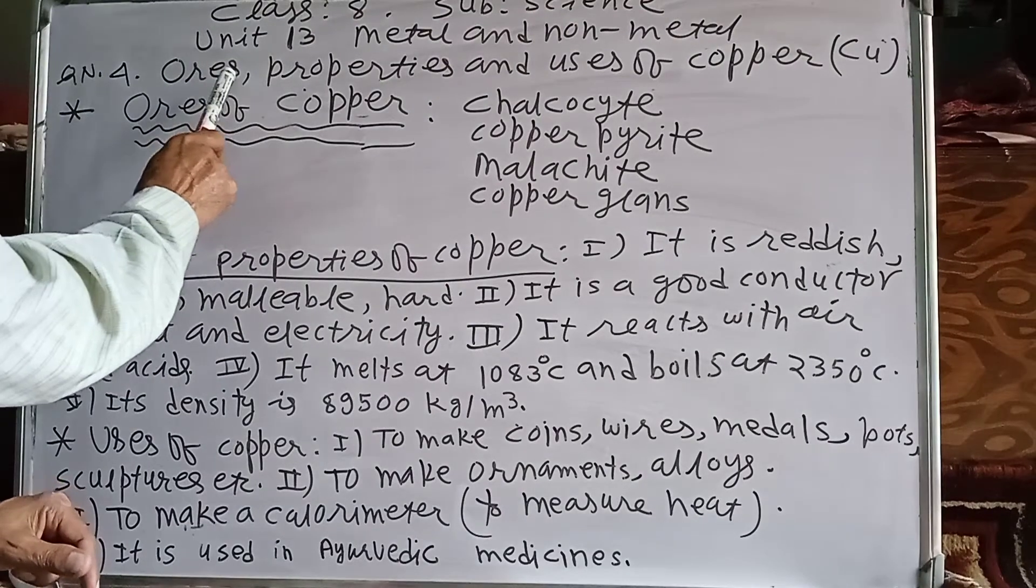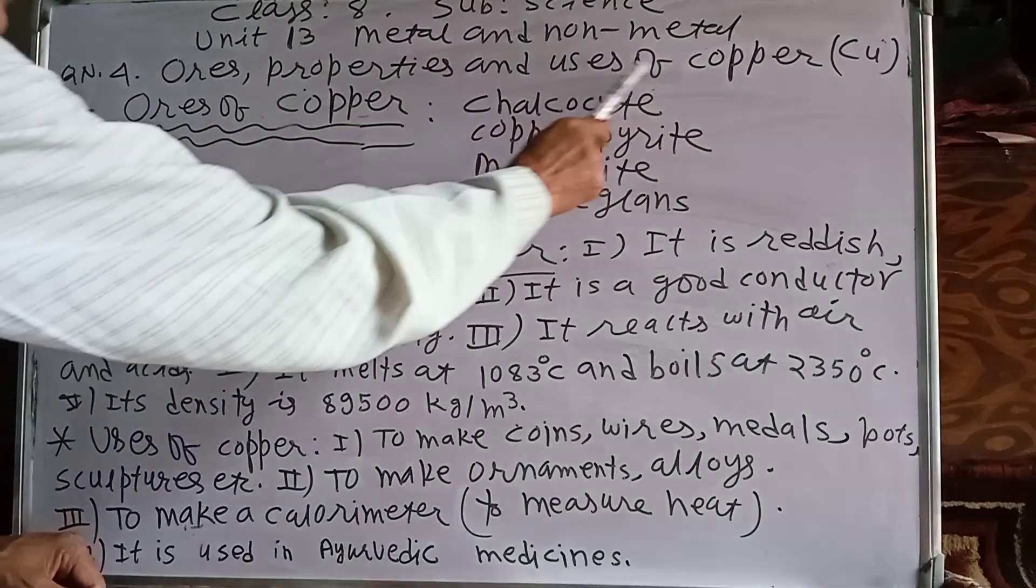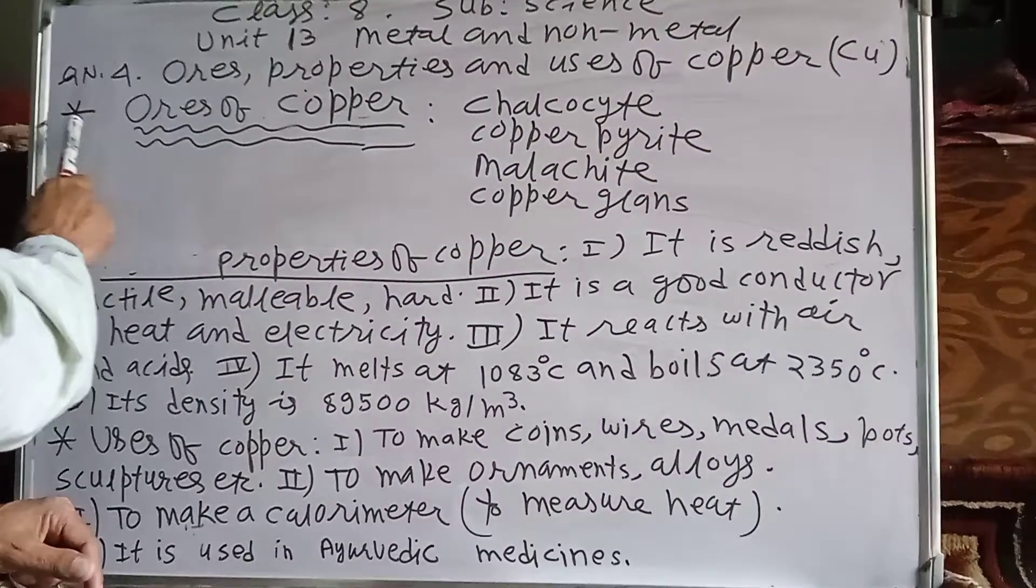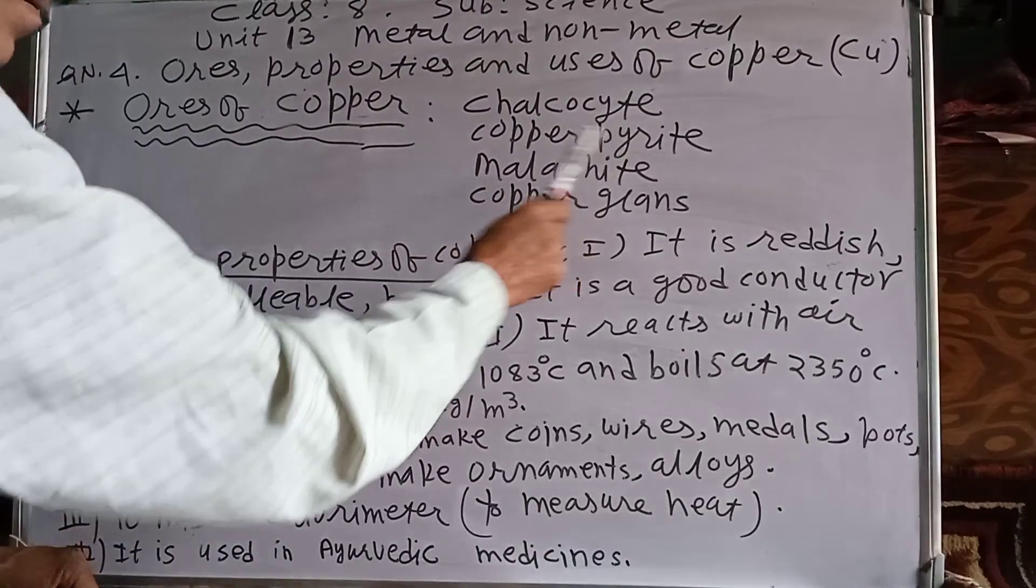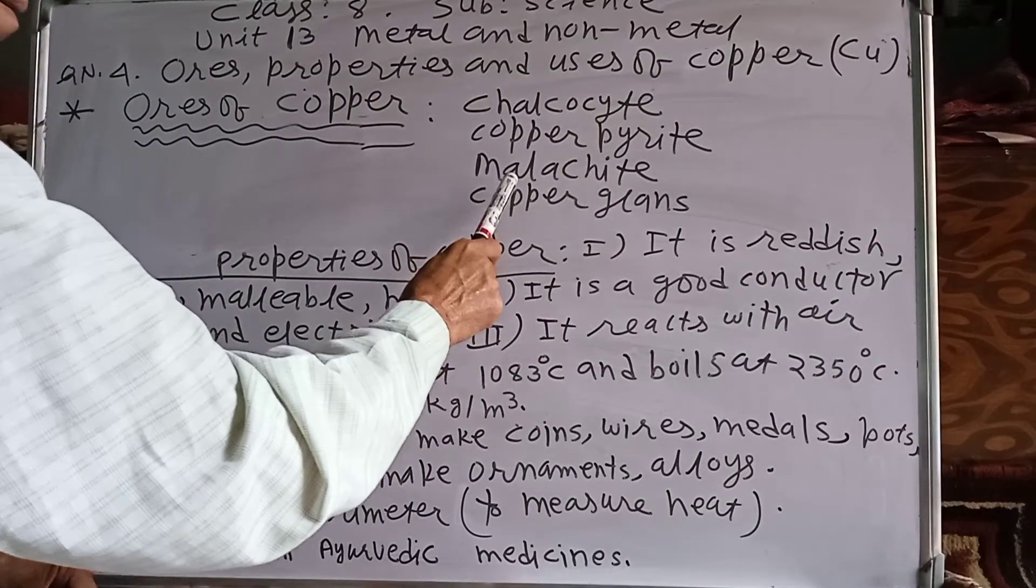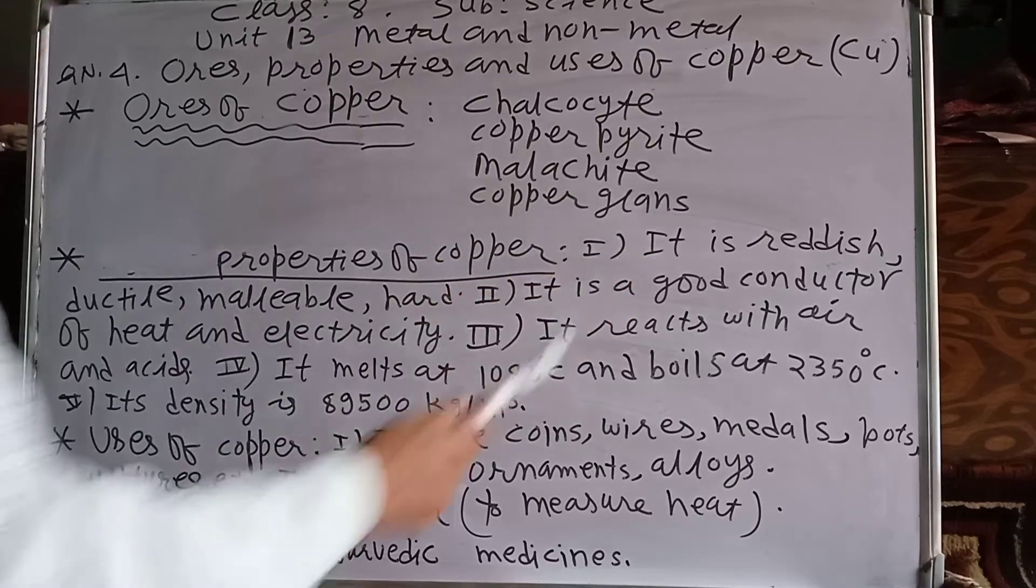Question number 4, ores, properties and uses of copper. One, ores of copper: chalcosite, copper pyrite, chalcopyrite, malachite, copper glands.